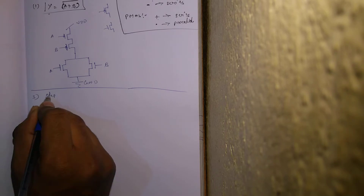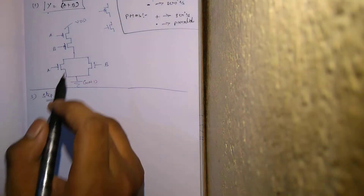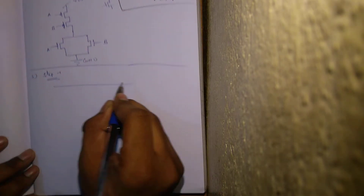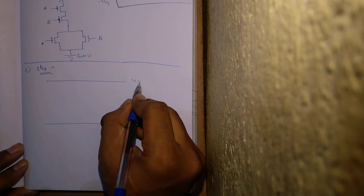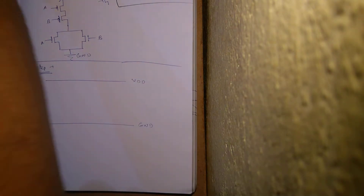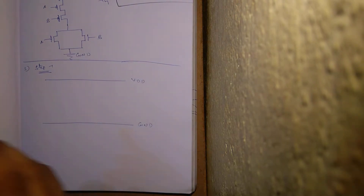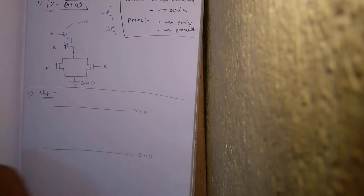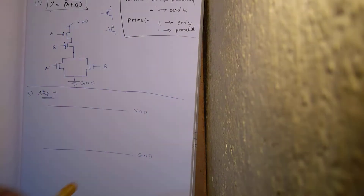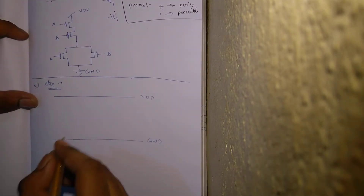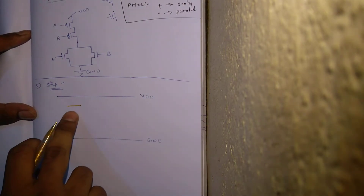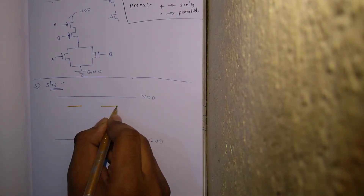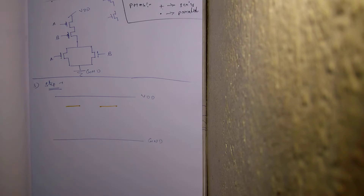Step one is to draw the VDD line and ground line. This is your VDD, and this will be your ground. The PMOS transistors here are in series — two PMOS transistors in series. This line is for A transistor and this line is for B transistor. When two transistors are in series, you place them side by side. And here, both NMOS transistors A and B are in parallel, so draw them a little lower, indicating some distance between them. You are done with step one.